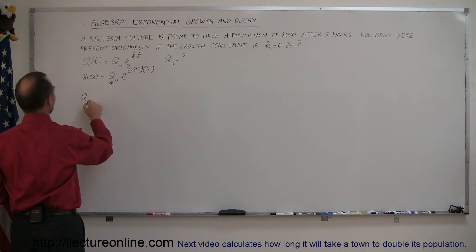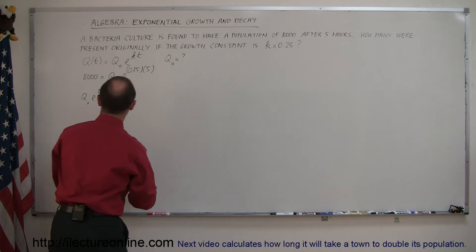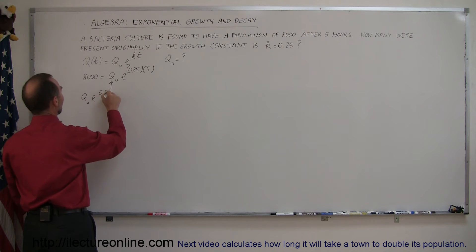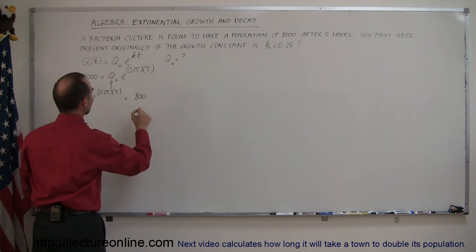So we have q sub nought times e to the 0.25, 0.25, getting ahead of myself, 0.25 times five equals, and then we put 8,000 on the other side. There we go.